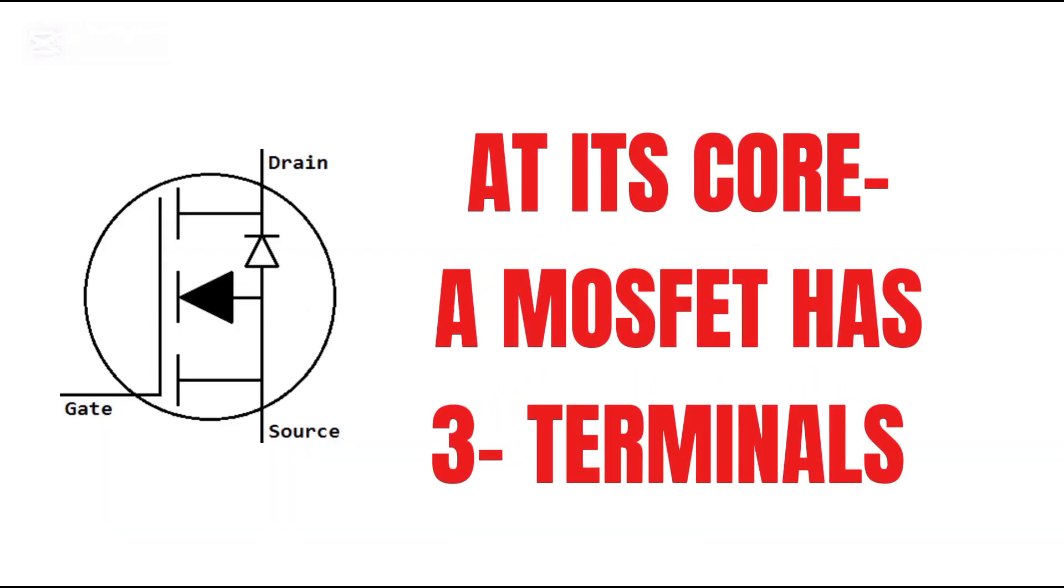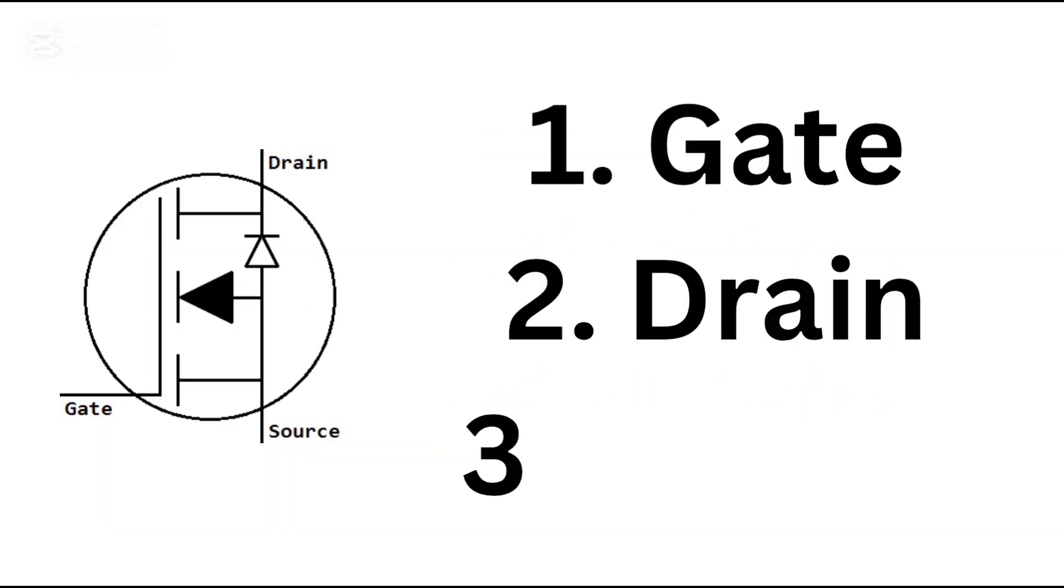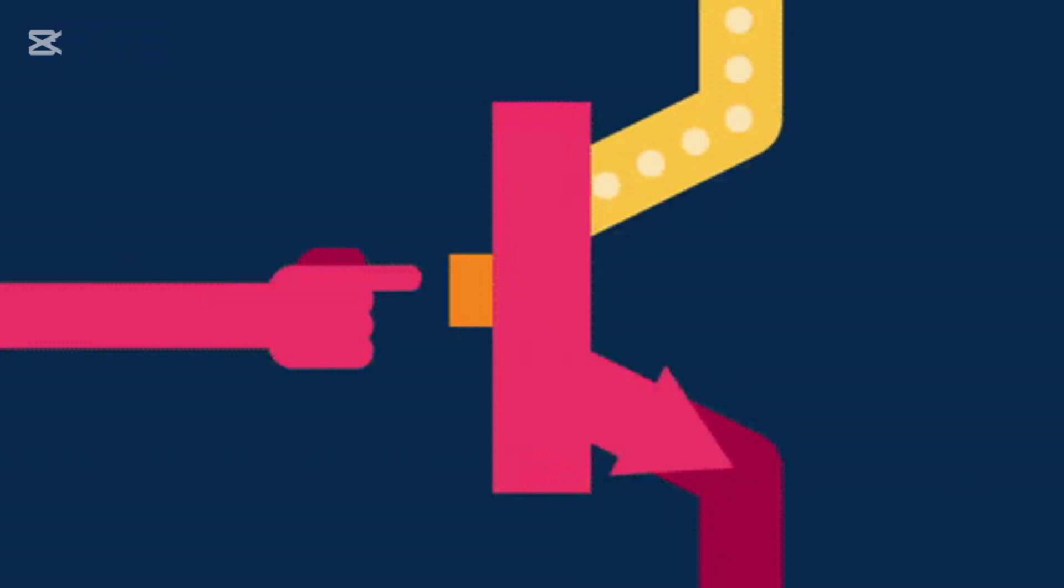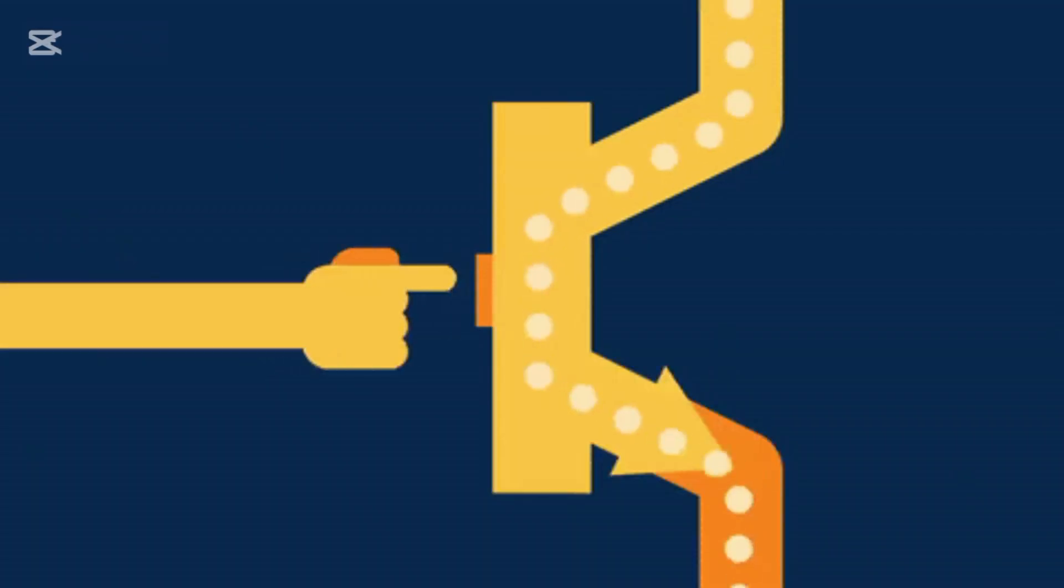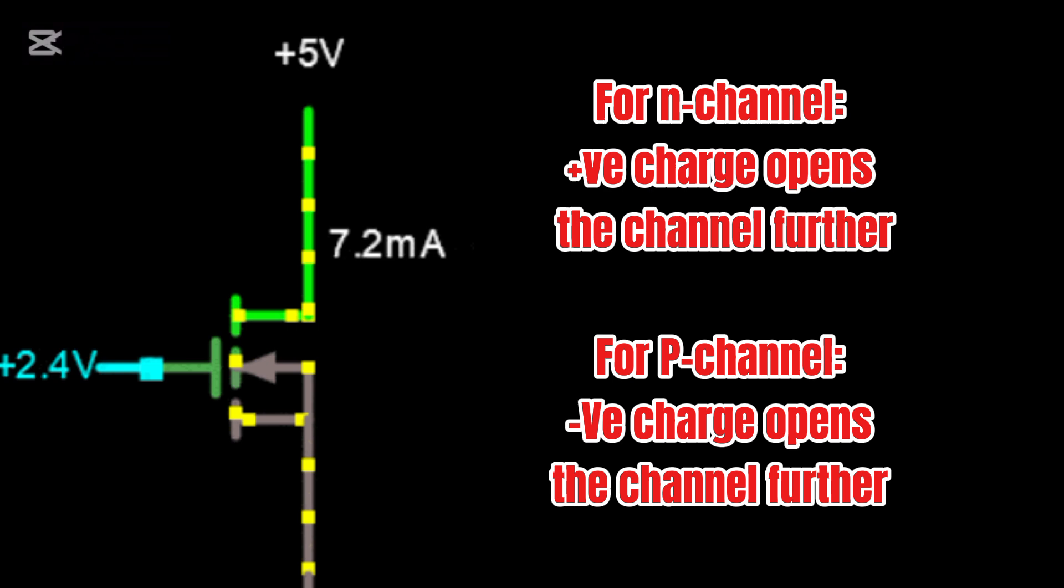At its core, a MOSFET has three terminals: gate, drain, and source. When voltage is applied to the gate, it creates an electric field that allows current to flow from drain to source. The higher the gate voltage, the more current flows.